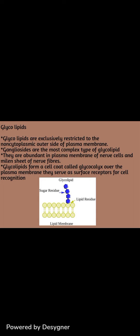The next one is glycolipids. Glycolipids are exclusively restricted to the non-cytoplasmic outer side of the plasma membrane. Gangliosides are the most complex type of glycolipids; they are abundant in plasma membranes of nerve cells and myelin sheaths of nerve fibers. Glycolipids form a cell coat called the glycocalyx over the plasma membrane, which serves as surface receptors for cell recognition.